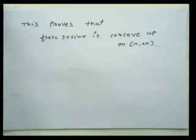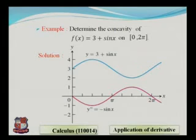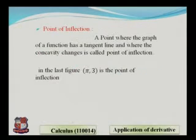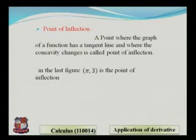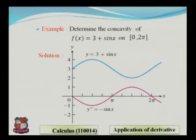Let us see the graph of this function. You can easily see that the function is concave down on (0, π) and concave up on (π, 2π) from this graph. The definition of point of inflection: a point on the graph where the function has a tangent line and where concavity changes is called a point of inflection. At point (π, 3), the function changes from concave down to concave up, so (π, 3) is the point of inflection for f(x).